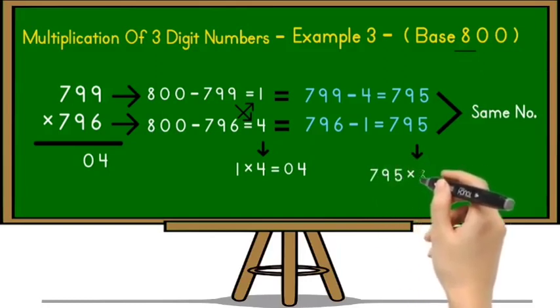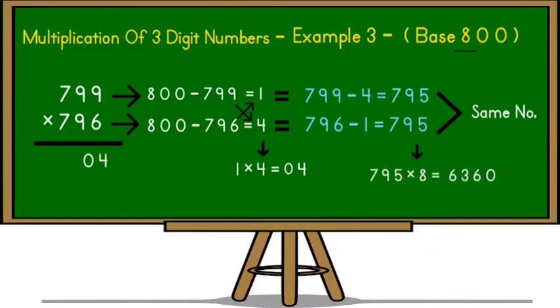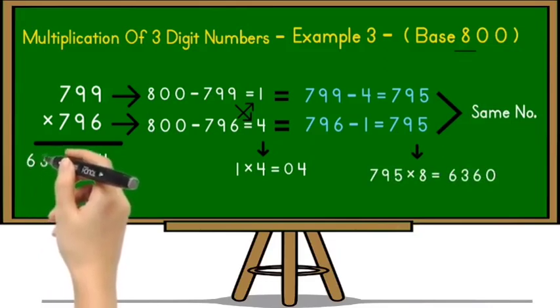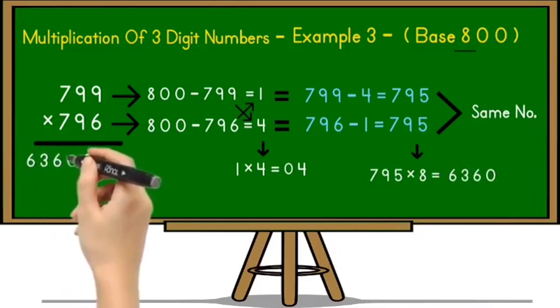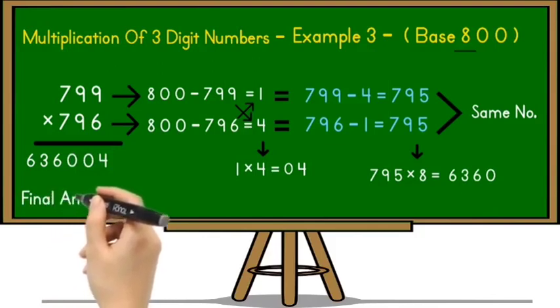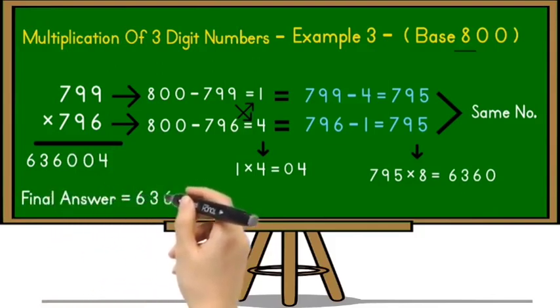So multiply with 8. So 795 multiply by 8 is equal to 6360. So put this number before 04 in a product. So the final answer is 6,36,004.